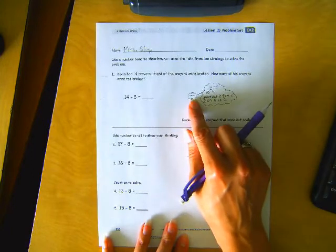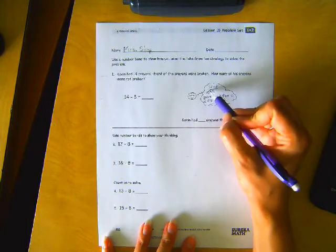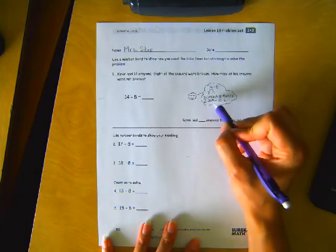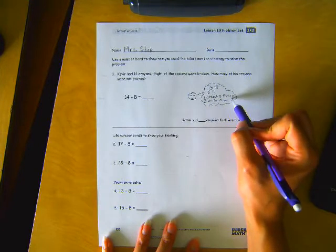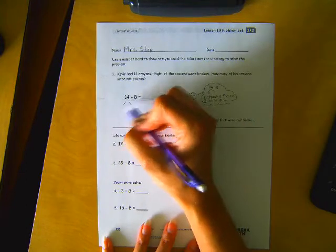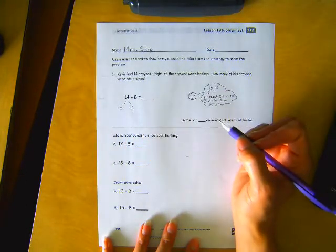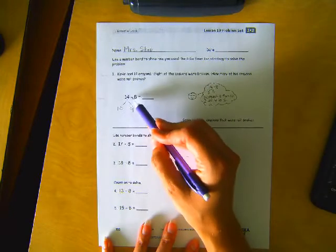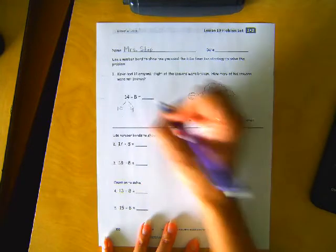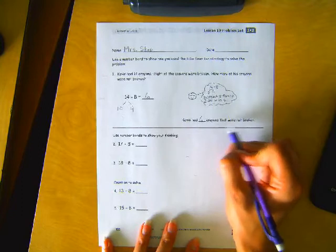So over here it shows their thinking. They took the 14 and put it into a friendly 10 and a 4. They subtract 8 from 10, which leaves 2 and 4, and that is 6. So they broke this up into a 10 and a 4. They minused 8 from 10, that left him with 2 and a 4. So that equals 6. So Kevin had 6 crayons that were not broken.